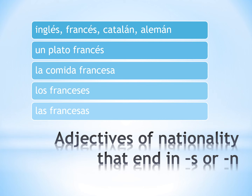Up next, we have adjectives that end in a consonant S or N. Notice how these ones all have an accent in the masculine singular form, but in all the other forms the accent drops off. Always think of the masculine singular form as the default setting, in which case you wouldn't need to make any changes to the adjective. Here are some examples: un plato francés, la comida francesa, los franceses — which would mean the French people, a mixture of both males and females — and las francesas, which would be the French women.